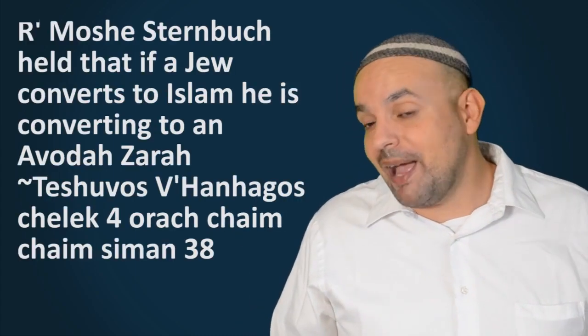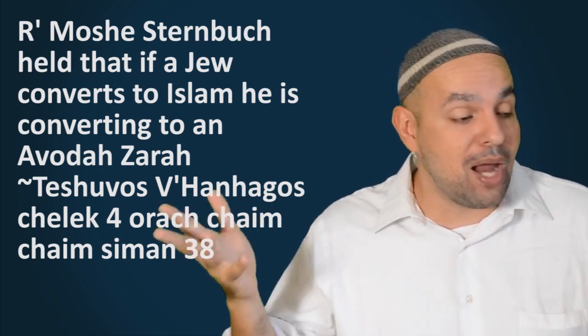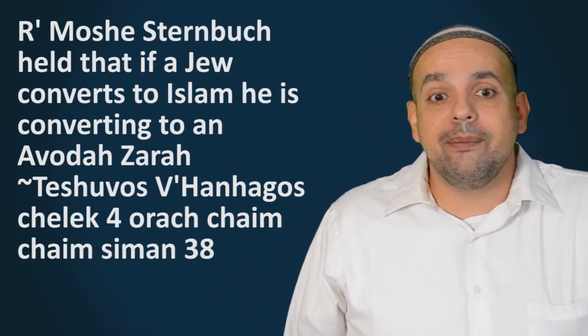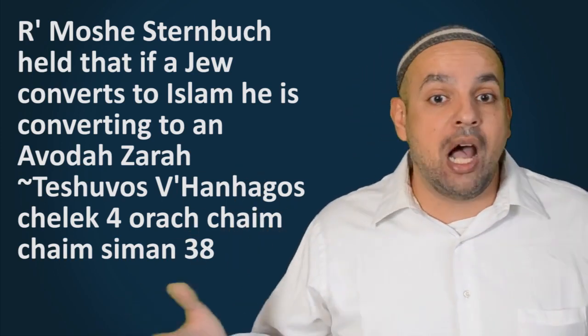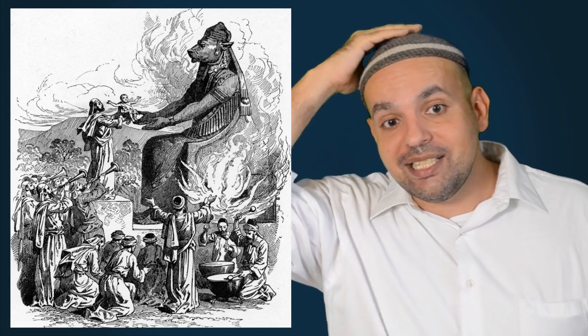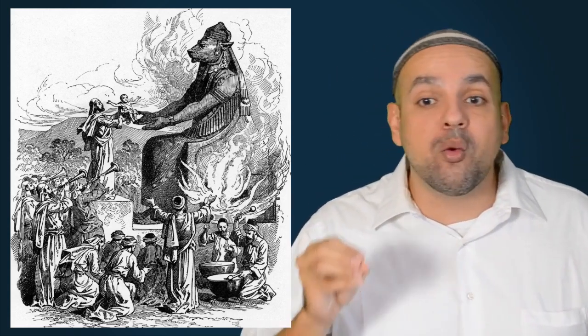Only because you worship one God does not mean that according to Jewish law you're not an idolater. This is the biggest rut my co-religionists get stuck in, thinking because someone worships only one God, they're in some way free from the halakhic parameters of what is considered avodah zarah. Someone who worships anything other than God, the God of Israel, is an idolater. And this is clear in halakha.